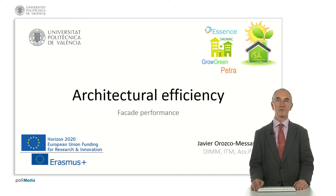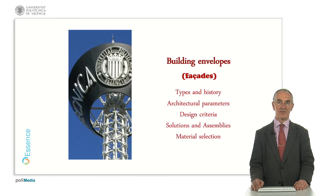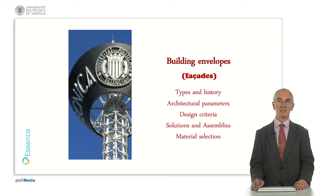Hi, Javier Rovko introducing the topic of architectural efficiency and the nugget on the performance of façades for this efficiency through materials. Whenever we're building envelopes or façades, we should consider different points: types and history of façades, the architectural parameters which should be implemented on our façade, which design criteria we are using, and how to introduce solutions through assemblies for all this. Once we have all the constraints, we will be able to make a proper material selection.